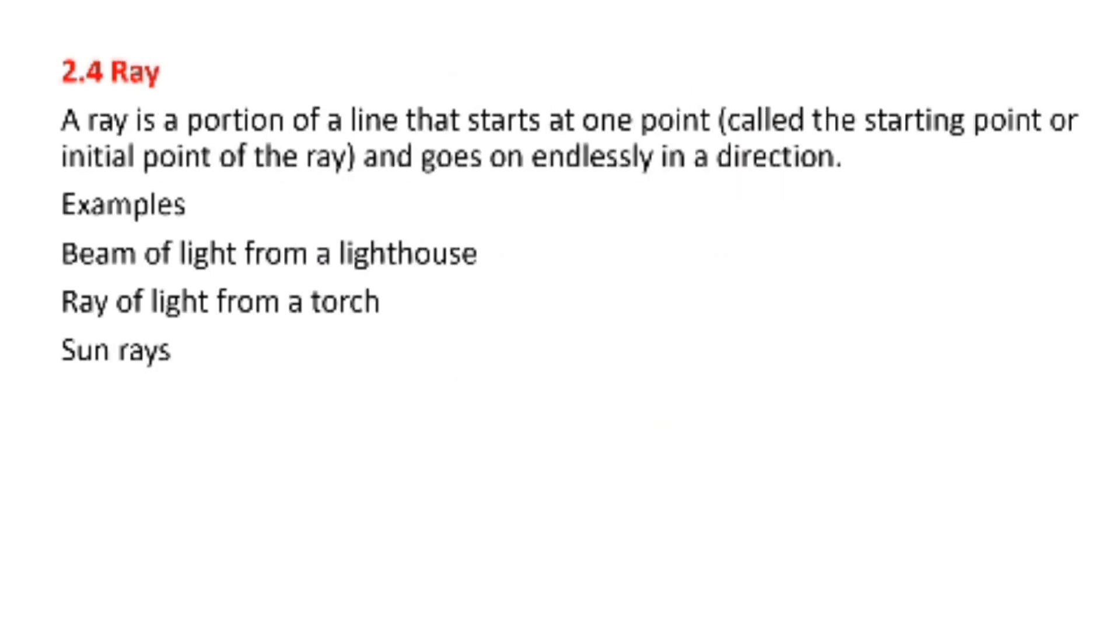Next one is ray. A ray is a portion of a line that starts at one point called the starting point or initial point of the ray and goes on endlessly in a direction. That means it has one fixed point and the other point goes on forever.